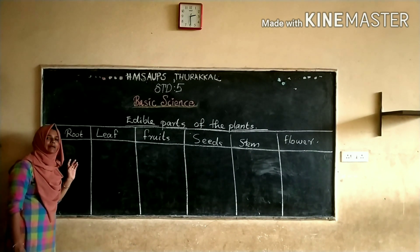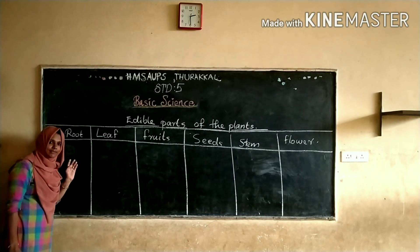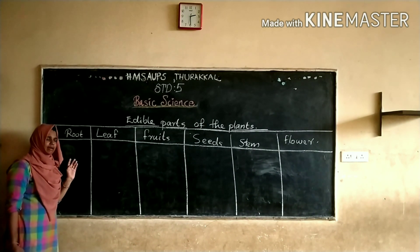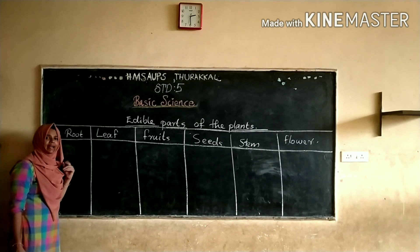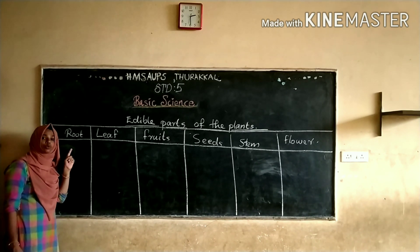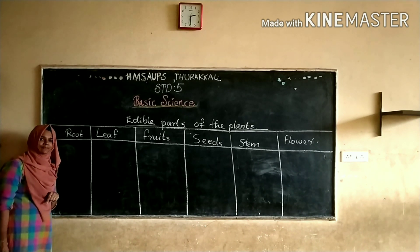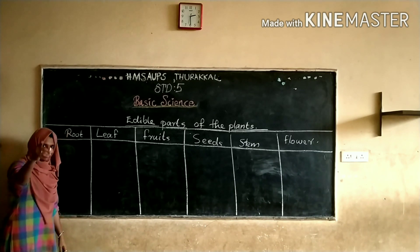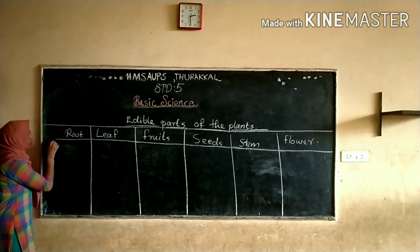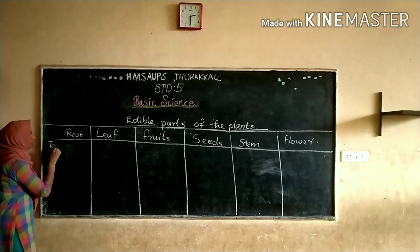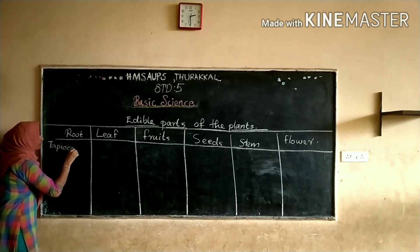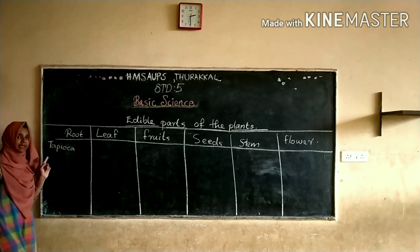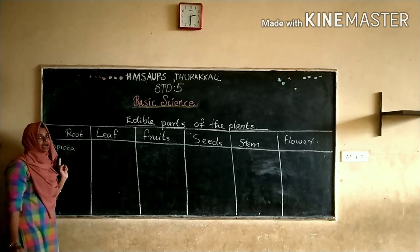Give me some examples of plants which can store food for us in roots. Do you know that? Yeah, tapioca. One example is tapioca. Tapioca means kula, kappa.